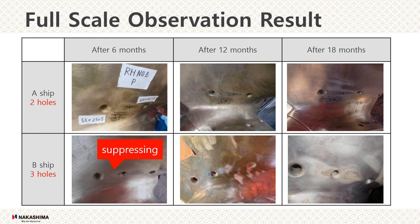This slide shows the change in the propeller blade surface conditions of ships A and B over time. Looking at the figure on the left, which shows the condition after six months in operation, erosion was observed between the anti-cavitation holes on the blade surface of ship A, but for ship B there was little erosion. After that, the erosion on both propellers gradually progressed, but the erosion range on the propeller blades of ship B was greatly suppressed.